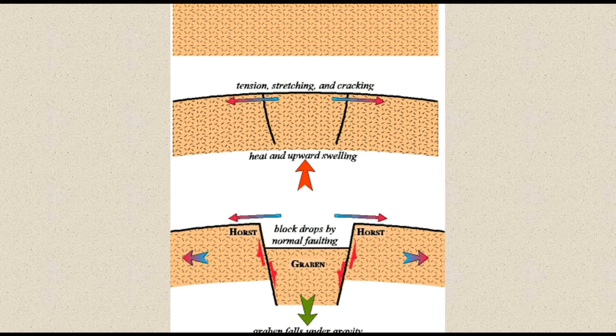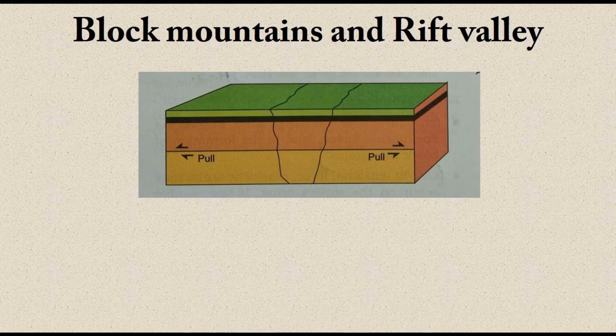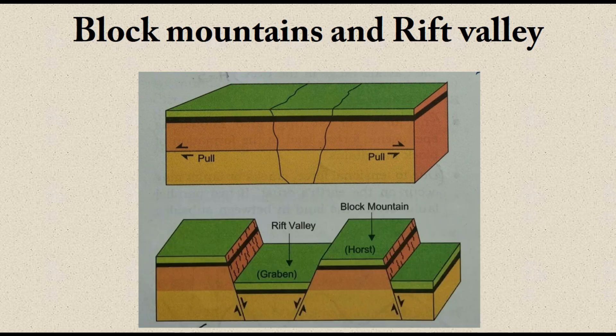Now in the middle we have a low-lying area, and on the left and right we have high land. The higher lands become mountains and the lower land becomes a valley — though this happens over hundreds of years. Mountains formed in this way are called block mountains, and the valleys formed in this way are called rift valleys. Block mountains are also called horst, and rift valleys are called graben.